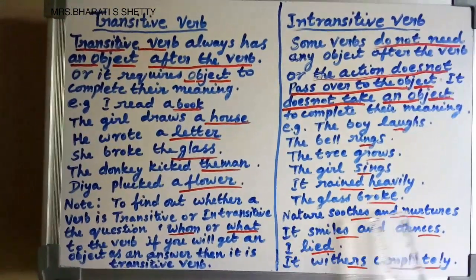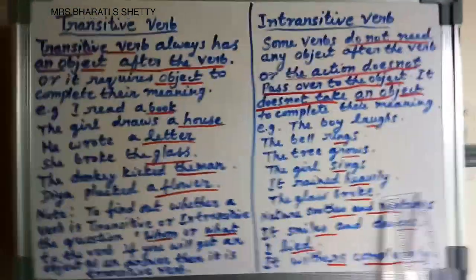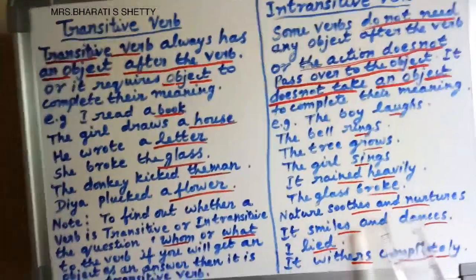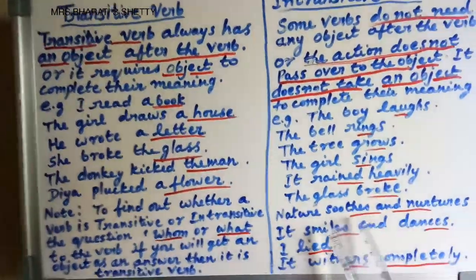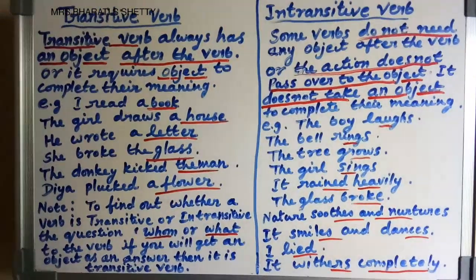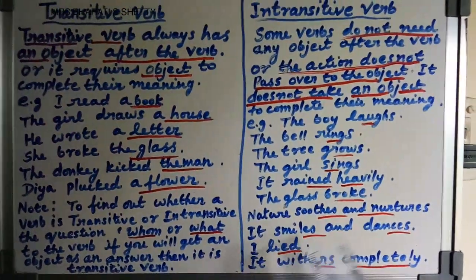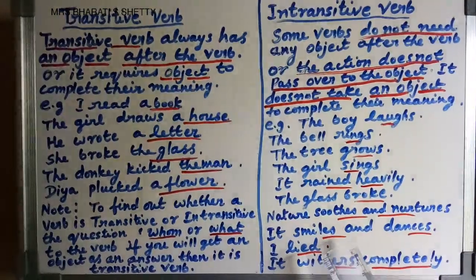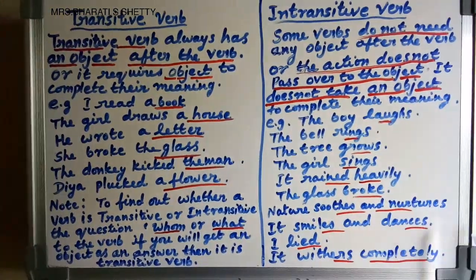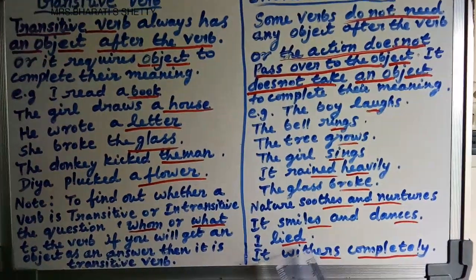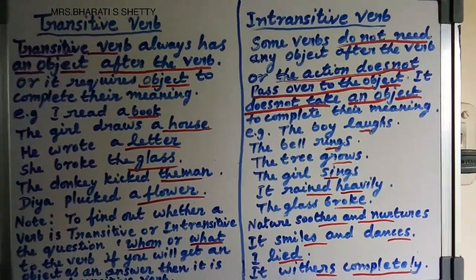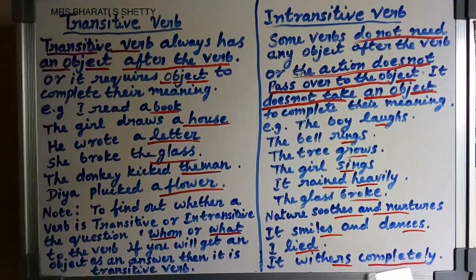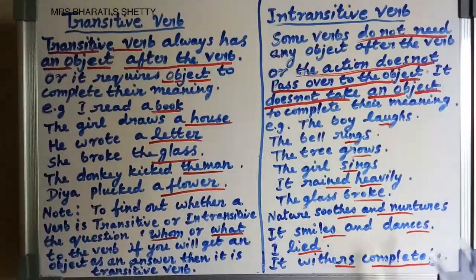Nature soothes and nurtures — here also, only verb, no object. It smiles and dances — only verb, no object after it. And I lied — verb only. It withers completely — here, after the verb there is an adverb. So all of these are called intransitive verbs.